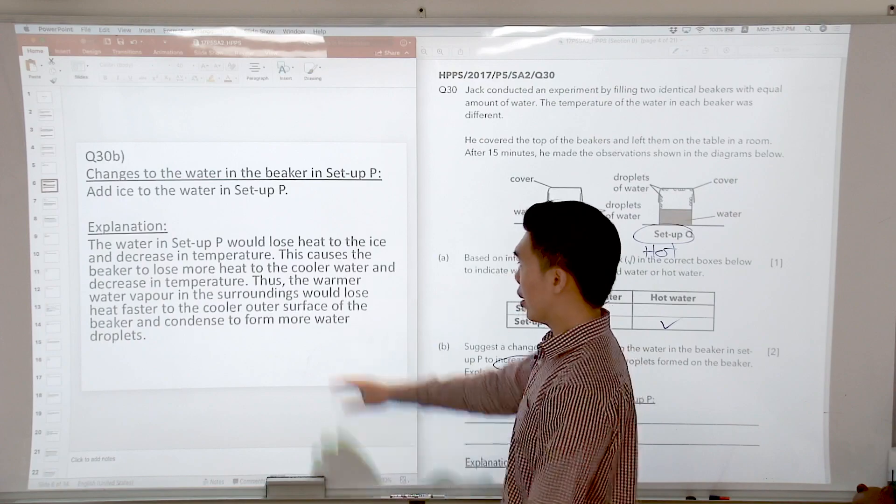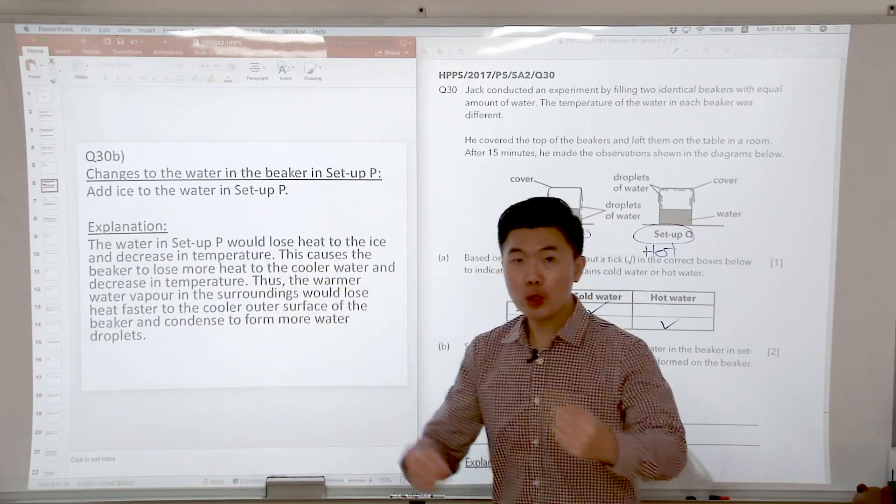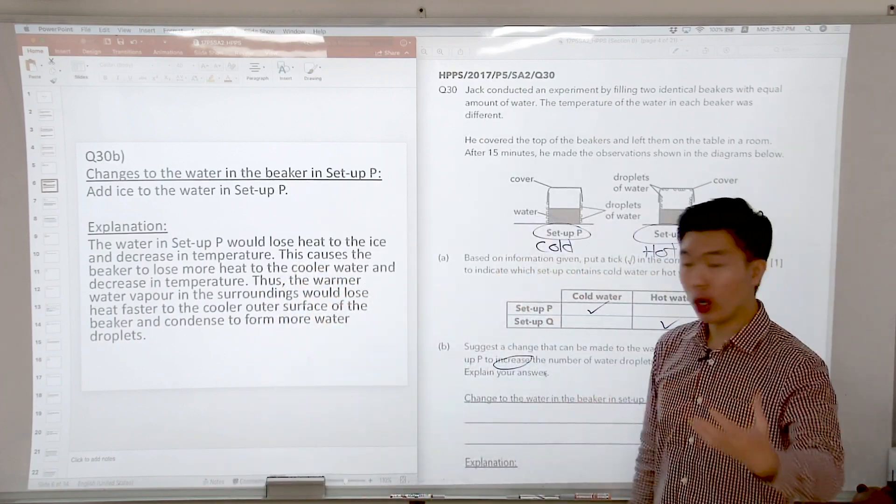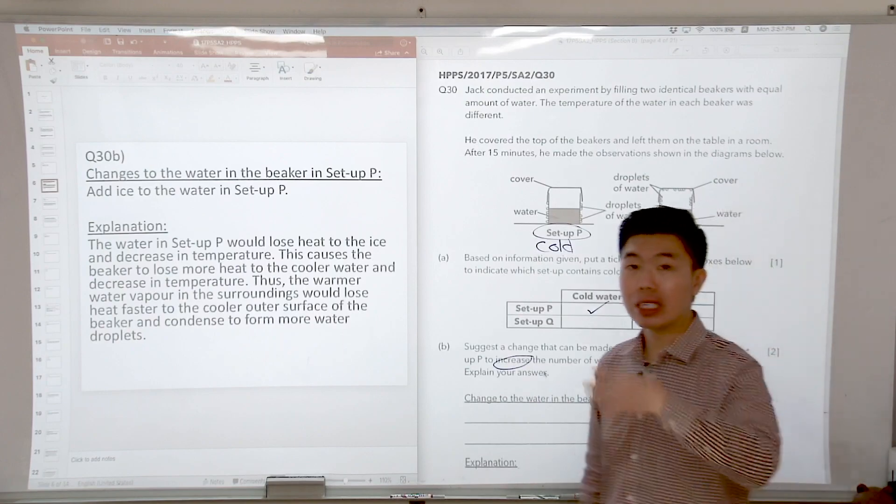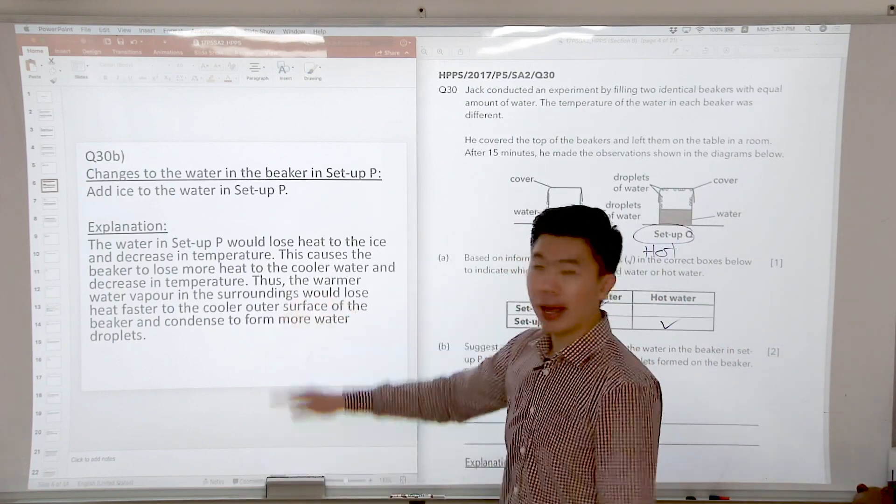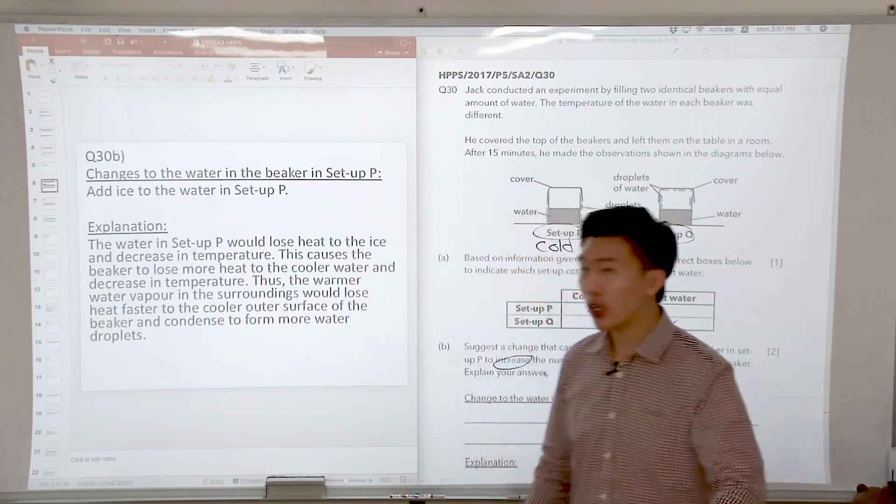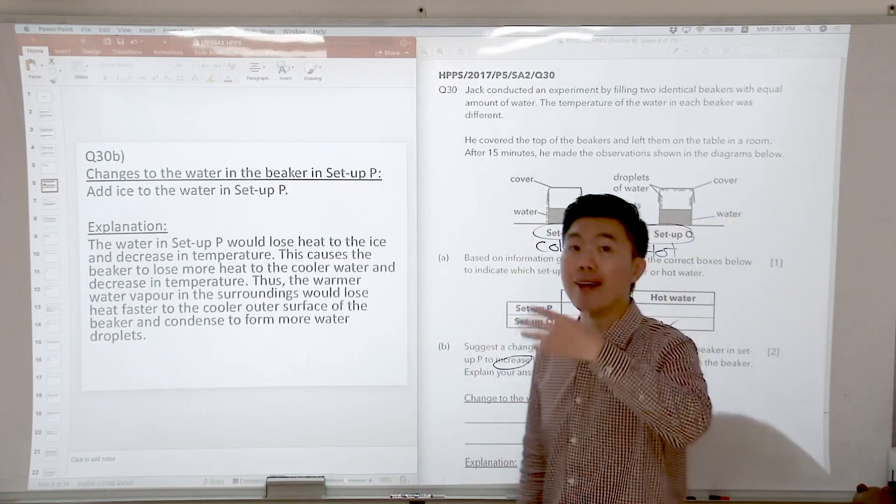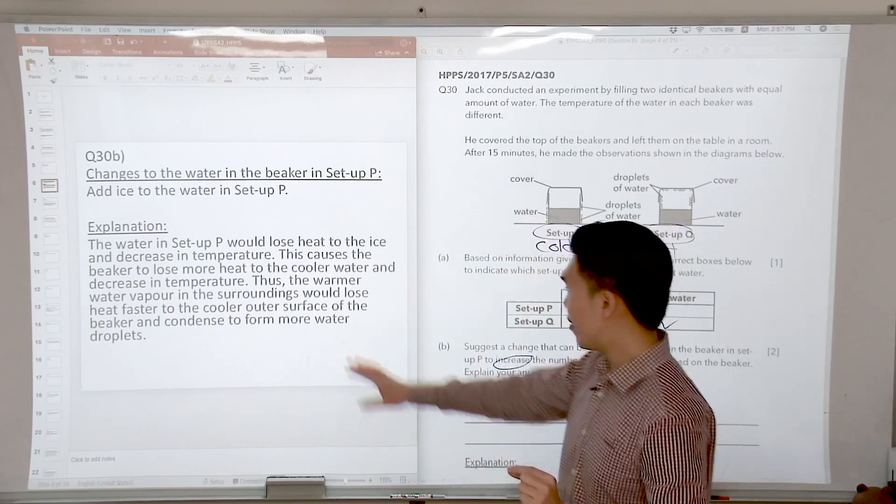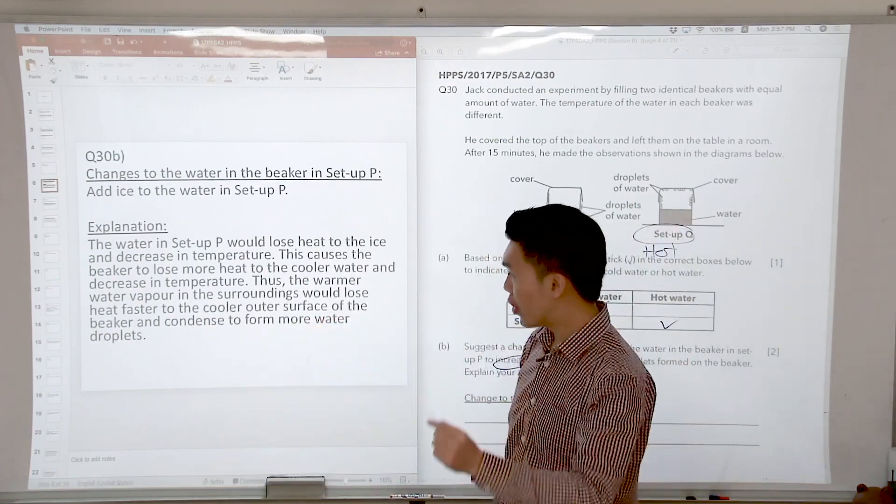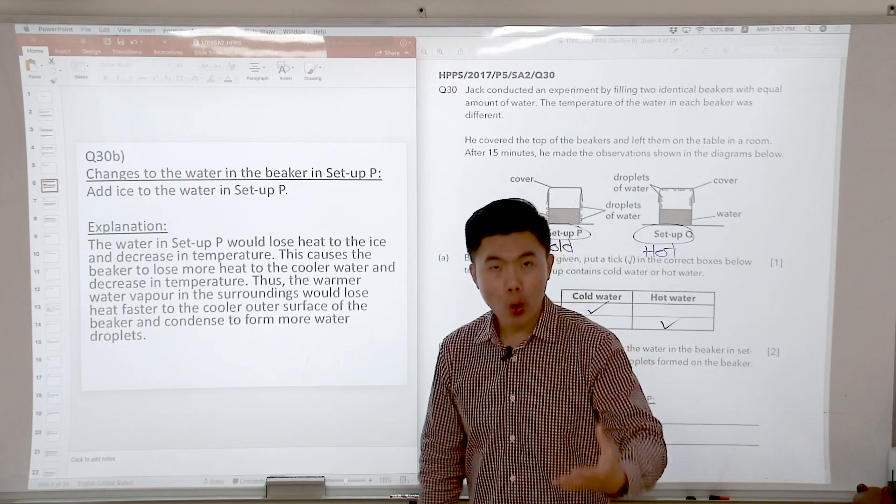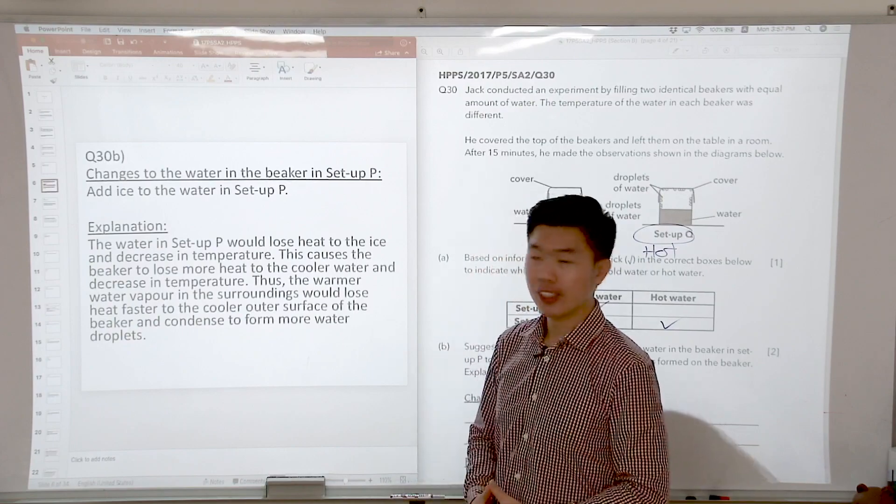Once the temperature is decreased, the beaker would then lose heat to the cooler water. So the beaker now becomes even colder and then the warmer water vapor from the surrounding air will come into contact with the cooler outer surface, lose heat faster. So the key word here is the comparison term, faster, and condense to form more water droplets.